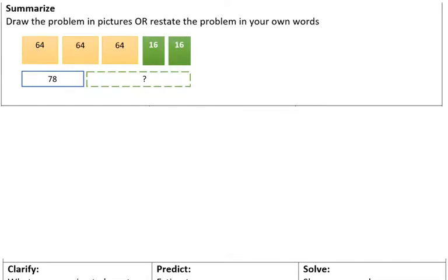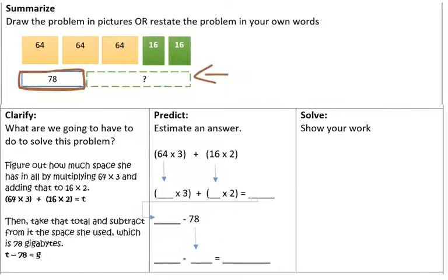The next section asks us to summarize the problem, or draw the problem, or we can even restate it in our own words. So, you can see, I drew three yellow boxes to represent the three hard drives that each have 64 gigabytes of memory. And then, I drew two green boxes to each represent the two hard drives that only have 16 gigabytes on them. Now, once you combine all that storage space, she's using 78 gigabytes for her files.